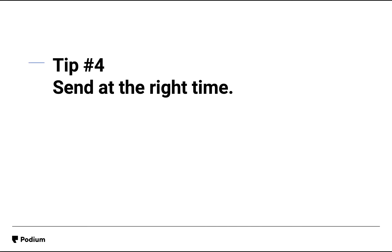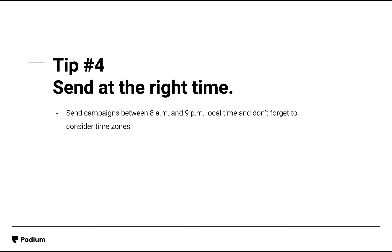Next, pick the right time to send a campaign. You'll want to send messages during your business hours, but don't send messages before 8am or after 9pm. Messaging outside of business hours will frustrate subscribers and make it difficult for them to ask questions if they run into issues. Before you hit send, make sure you've considered time zones. To prevent overwhelming your subscribers, you'll only be allowed to send 4 messages a month to any given subscriber.